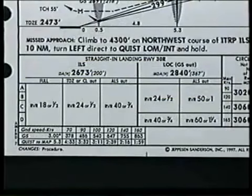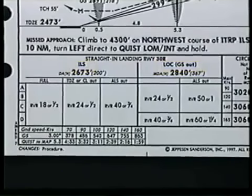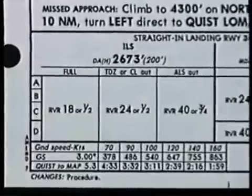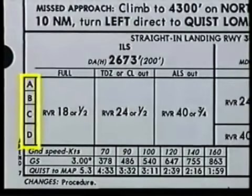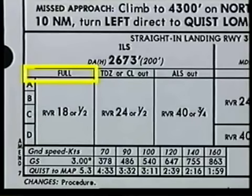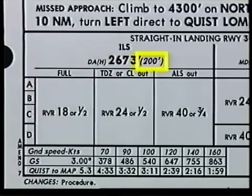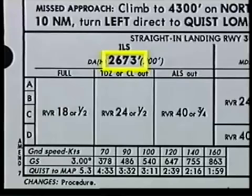On ILS approach charts, the straight in landing section is further divided into minimums with and without the glide slope. On the left hand side of the minimums box, aircraft categories are represented by the letters A, B, C and D. The first column of an ILS approach is designated as full. The minimums within this column apply when all components are operational. In this example, no matter which category of aircraft you're flying, you can descend to a decision height of 200 feet above the touchdown zone elevation, which at this location is a decision altitude of 2,673 feet MSL.